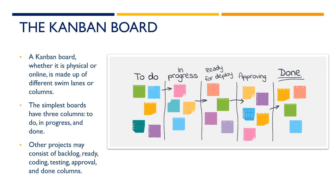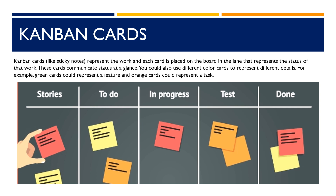The simplest boards have three columns: to do, in progress, and done. Other projects may consist of backlog, ready, coding, testing, approval, and done columns. Kanban cards, like sticky notes, represent the work, and each card is placed on the board in the lane that represents the status of that work. These cards communicate status at a glance. You could also use different color cards to represent different details — for example, green cards could represent a feature and orange cards could represent a task.